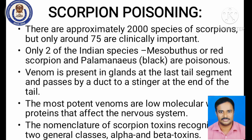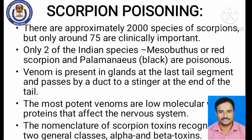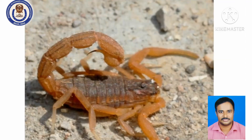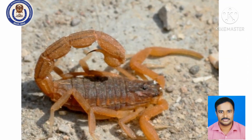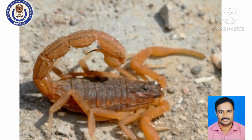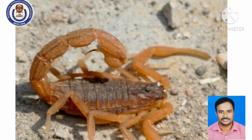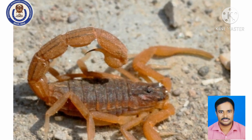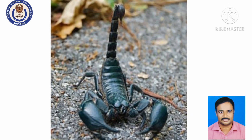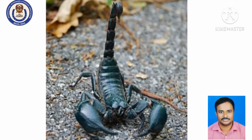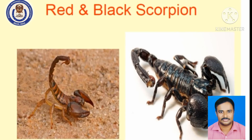Moving on to scorpion poisoning: there are approximately more than 2,000 species of scorpions in the world, but only 75 species are clinically important and induce toxicity. In India, there are two important species — Mesobuthus, commonly called the red scorpion, and the black scorpion. These two species most commonly induce poisoning conditions in animals. The venom is present in glands at the last tail segment and passes through a duct to the stinger at the end of the tail.